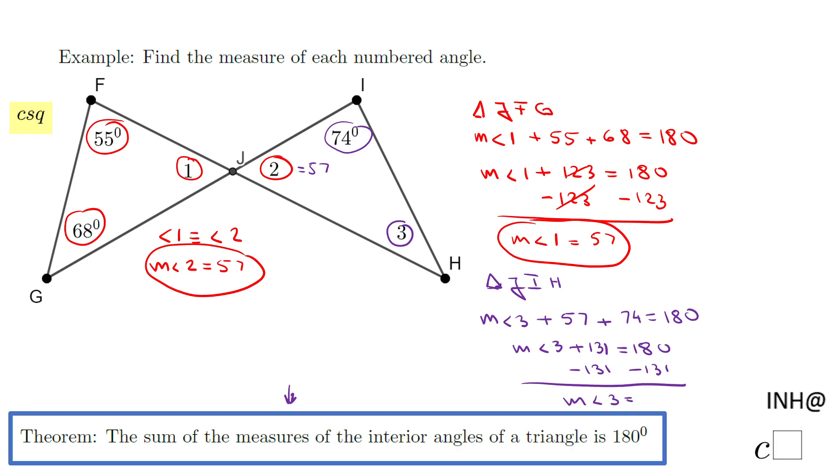equal 180 minus 131, which is 49 degrees. And that's it for this problem. If you enjoyed this problem, don't forget to click the like button and come back to C Squared for more help. Thank you!